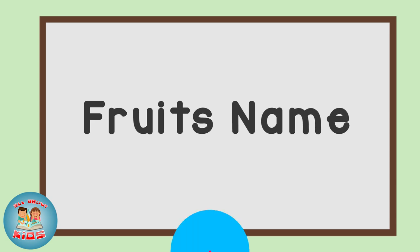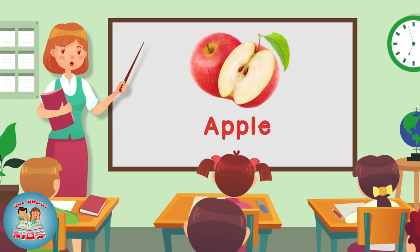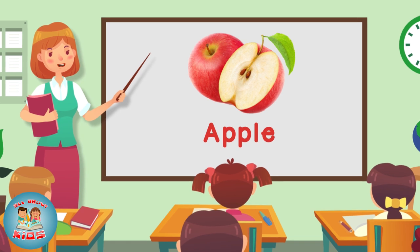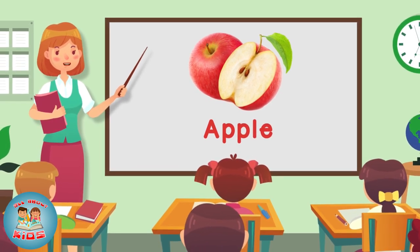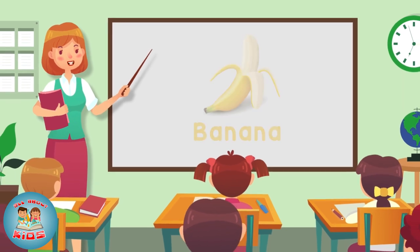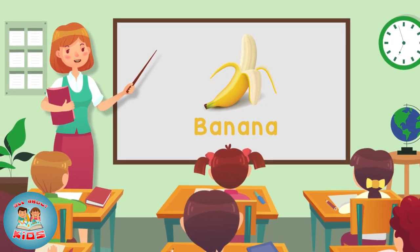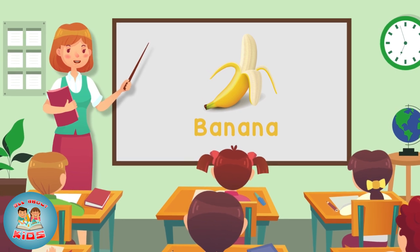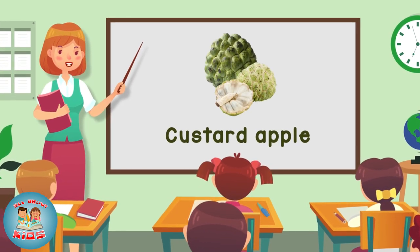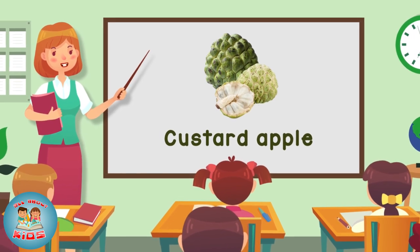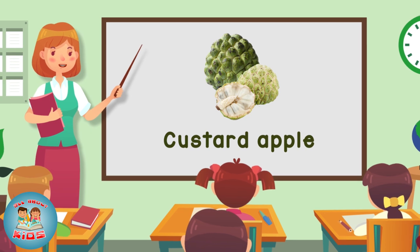Fruits name. Apple — this is an apple. Banana — this is a banana. Custard apple — this is a custard apple.